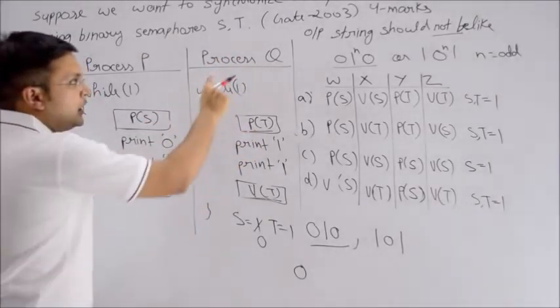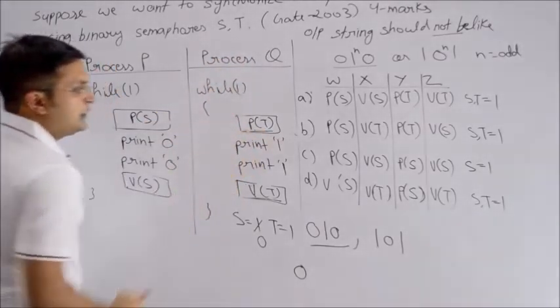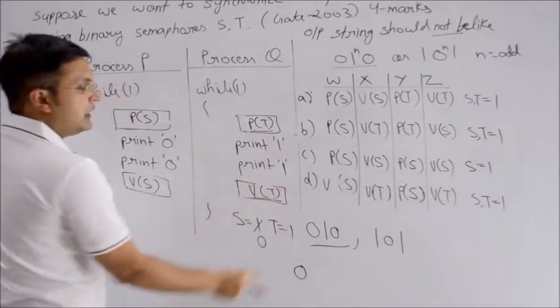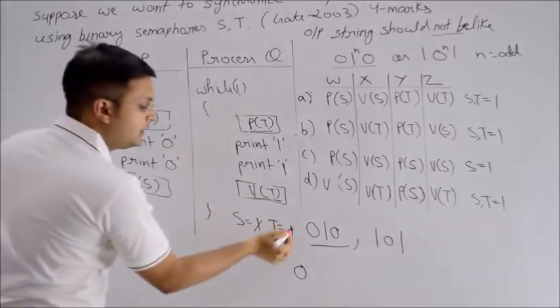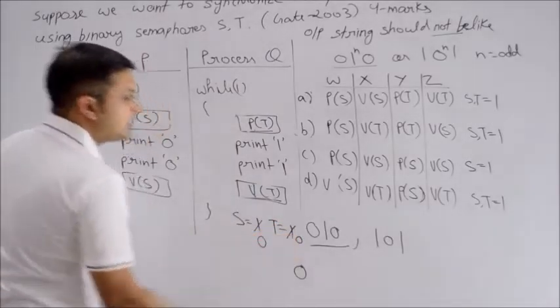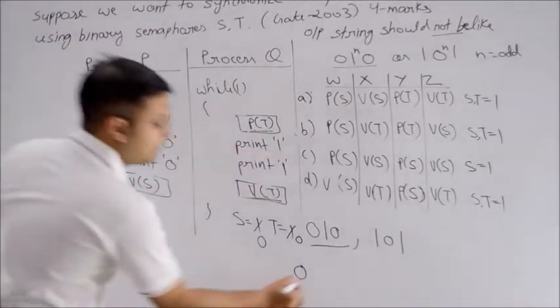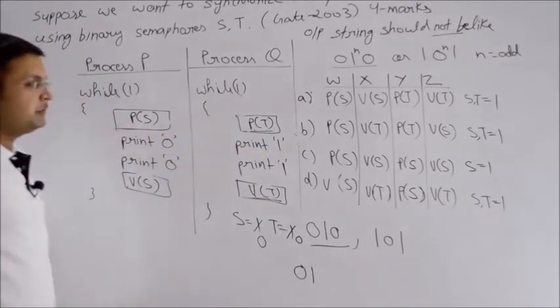Now you're with process Q and you have P of T. Can you decrement T? Yes, because T's value is currently 1. We can decrement it - P of T makes it 0. As soon as we make it 0, we can print 1. So I print 1, very good.